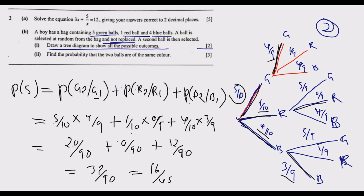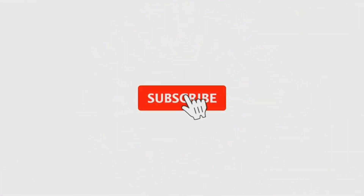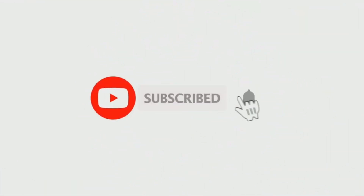Simplifying 32 over 90 by dividing both by 2 gives 16 over 45, which is approximately 0.356. This is the final answer for the probability that the two balls are the same color.